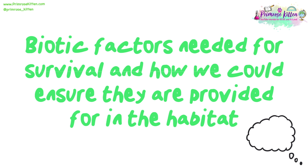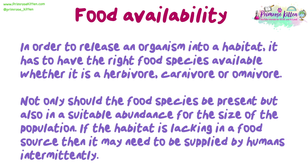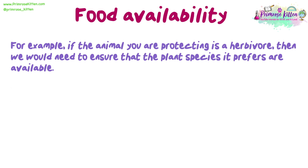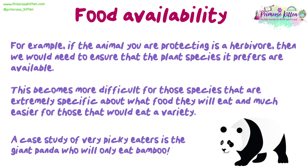Biotic factors needed for survival and how we could ensure they are provided for in the habitat. Food availability: in order to release an organism into a habitat, it has to have the right food species available, whether it is a herbivore, carnivore or omnivore. Not only should the food species be present, but also in a suitable abundance for the size of the population. If the habitat is lacking in a food source, it may need to be supplied by humans intermittently. This becomes more difficult for those species that are extremely specific about what food they will eat. A case study of very picky eaters is the giant panda, who will only eat bamboo.